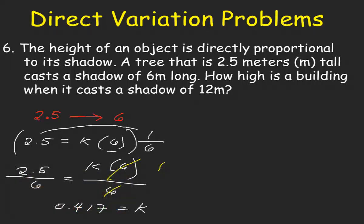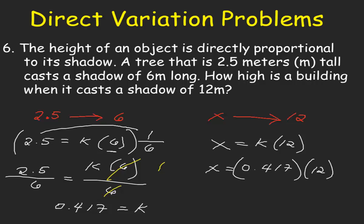How high is a building when it casts a shadow of 12 meters? We do not know the height of the building, so let's represent that by x. So x is to the shadow distance of 12 meters. Our direct variation equation will be x is equal to k times 12. Our value for k is 0.417 multiplied by 12. So x equals 0.417 times 12, which is equal to 5 meters. So the height of the building is 5 meters.